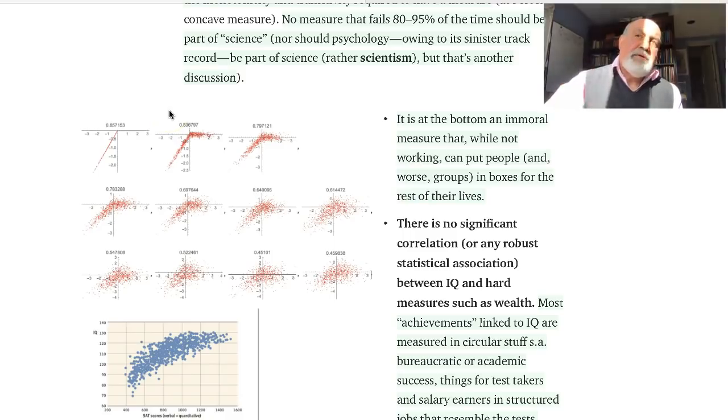So if a measure can detect incompetence, it will give you the illusion of having a very high correlation and detecting competence, although it's flat above a certain level—in other words, cannot detect competence.